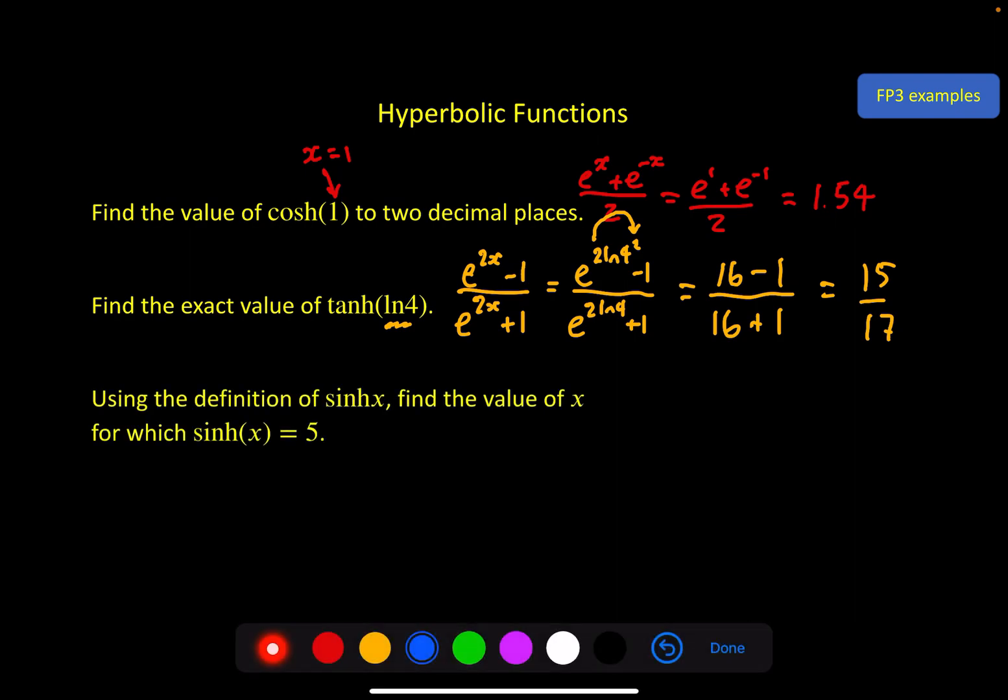Okay, example 3. Using the definition of sinh x, that's an important phrase because as we'll see on the fourth example, your calculator can do most of these things. But when it says using the definition that's telling you this is what we're trying to test, you must do it this way. So using the definition, find the value of x for which sinh x is equal to 5. And what we can do here from our definition, e to the x minus e to the minus x over 2, must equal 5.